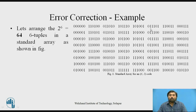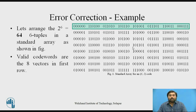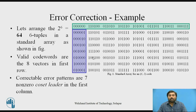Each row of this standard array is a coset, and each element in the first column of each row is the coset leader. This is a standard array for a (6,3) code. The first row contains the valid codewords — 8 vectors in the first row. The starting element of each row in the first column is the coset leader.